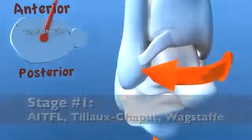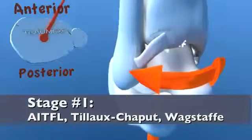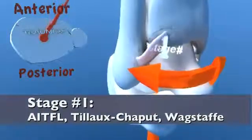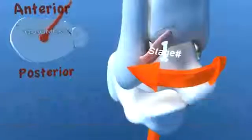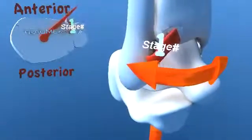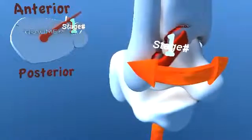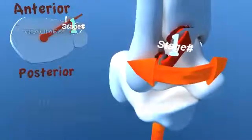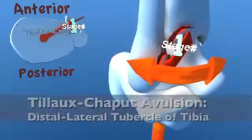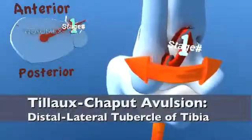In a stage 1 injury, one of two pathologies may occur: rupture of the anterior inferior tibial fibular ligament, or a fracture of the distal lateral tibia, also known as a Tillaux fracture.